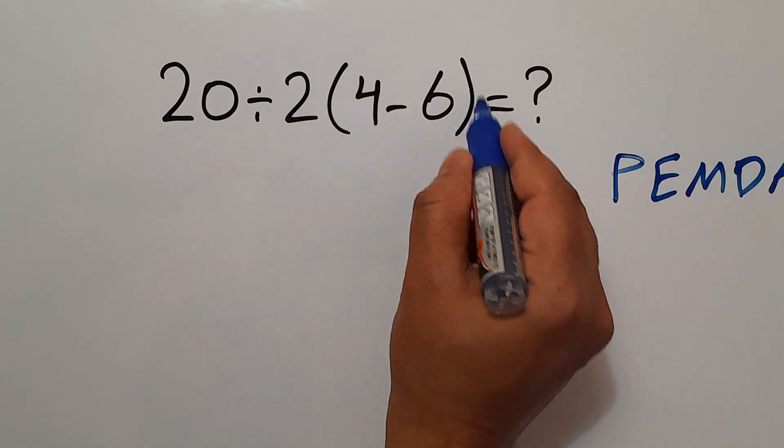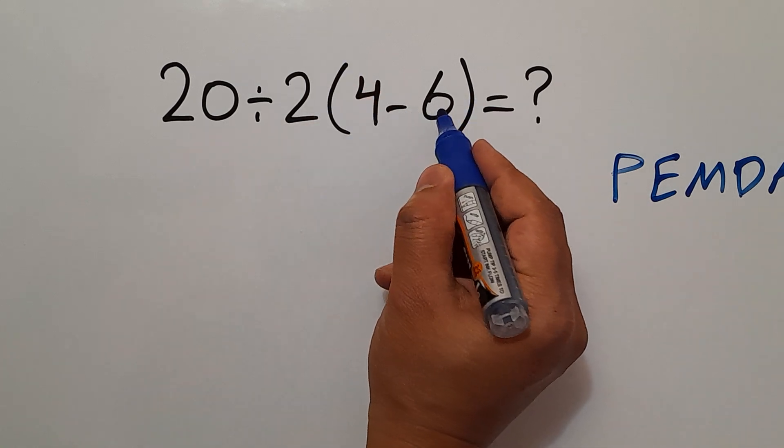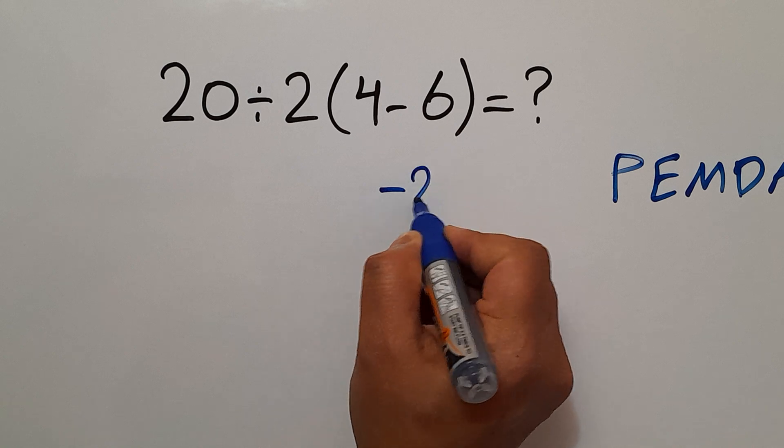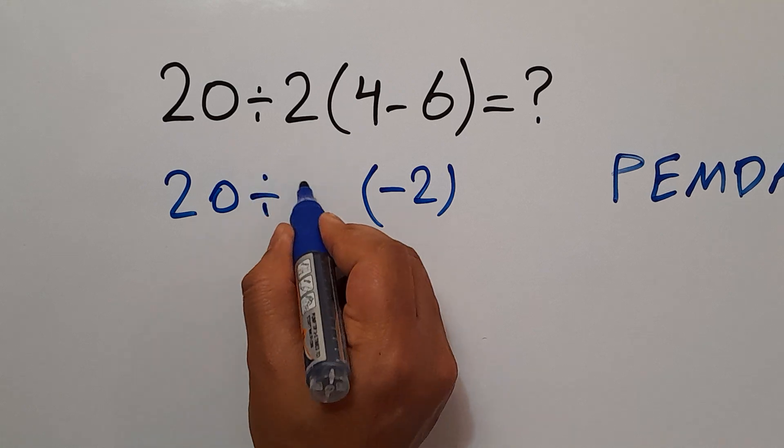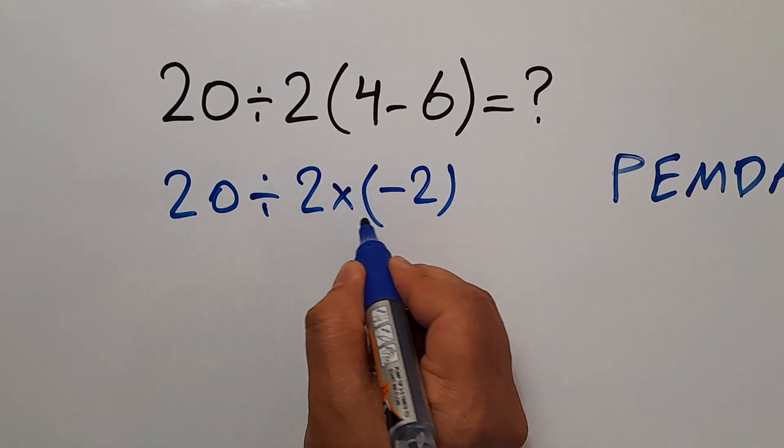So here first we do these parentheses. 4 minus 6 equals negative 2. Let's recopy: 20 divided by 2 then times negative 2.